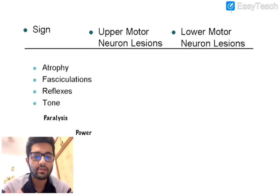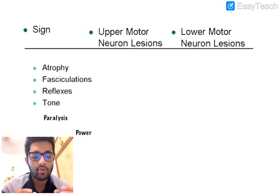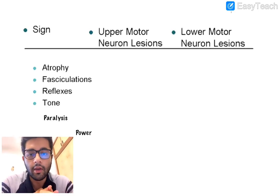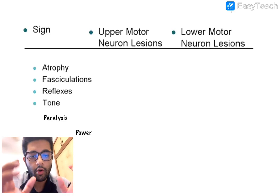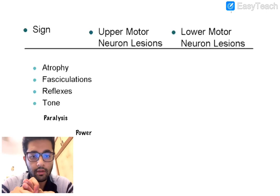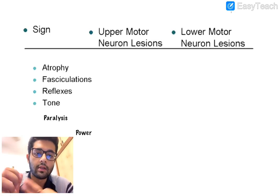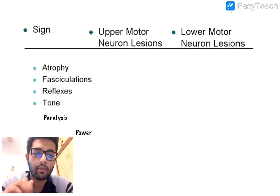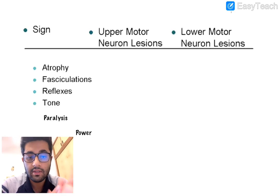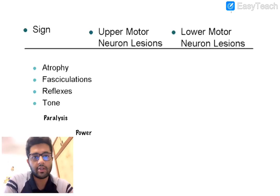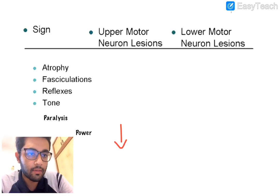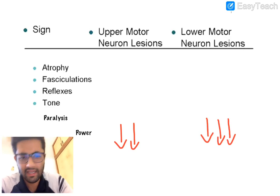In stroke, we most commonly see UMN-type paralysis. When examining the motor system, we look at four things: bulk of the muscle, power, tone — which is the passive resistance offered by a muscle to passive motion — and reflexes. We'll discuss the differences in each of these between UMN and LMN lesions.